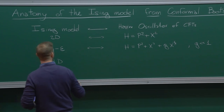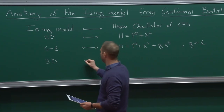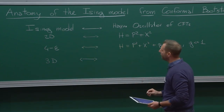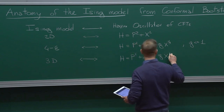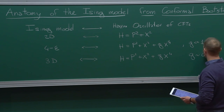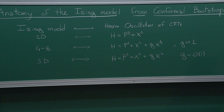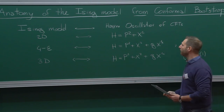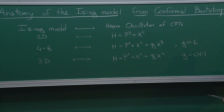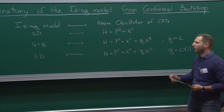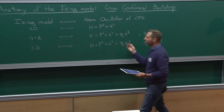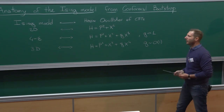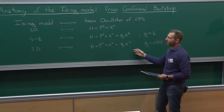The three-dimensional Ising model is a strongly coupled theory — it's very hard to do anything about it. We can relate this to the harmonic oscillator with a quartic interaction where the coupling G is of order one. So how do we tackle such a problem? You can imagine developing perturbation theory around small G and resumming it, but this model can also be studied in various other ways. The bootstrap is a particular approach you can develop, and I want to explain one possible way of studying the anharmonic oscillator.